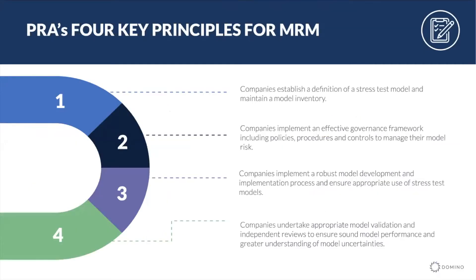Four key principles for MRM from the Prudential Regulation Authority — primarily targeted at financial institutions but actually applying across all industries. First, the establishment of a stress test regulation standard for your models and maintaining a model inventory. Second, implementing an effective governance framework with policies and procedures. Third, having a robust model development and implementation process, along with appropriate stress testing of models, including independent validation teams and thinking about model results based on different inputs, parameters, and volatility assumptions. Finally, all companies will undertake appropriate model validation and independent reviews to ensure sound model performance and a greater understanding of model uncertainties.